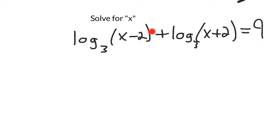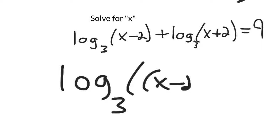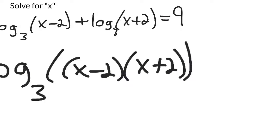So over here, this is like my a, this is like my b. You can rewrite it as a new logarithm: log base 3 of (x minus 2) times (x plus 2), my a times my b. And it all equals 9 still.